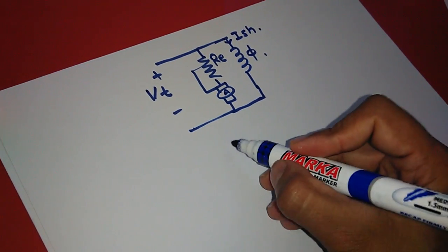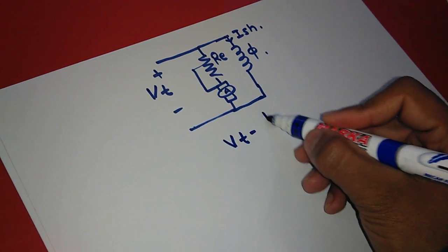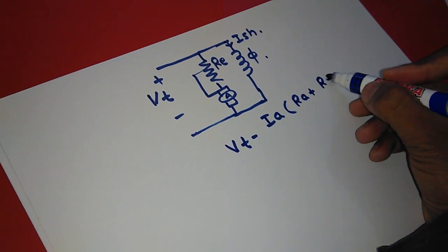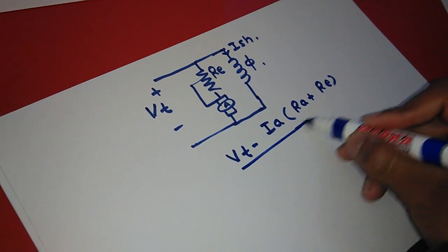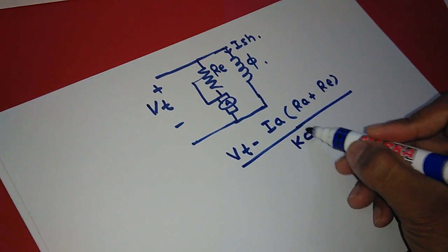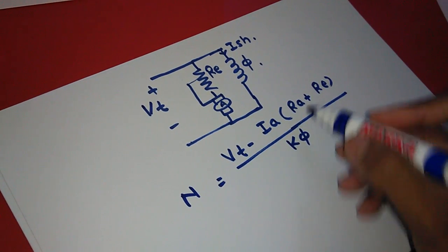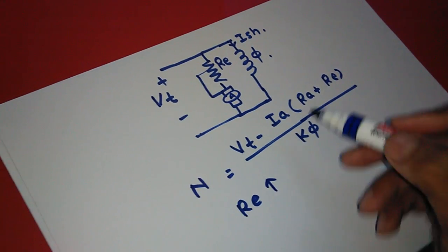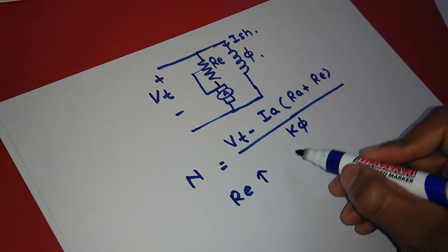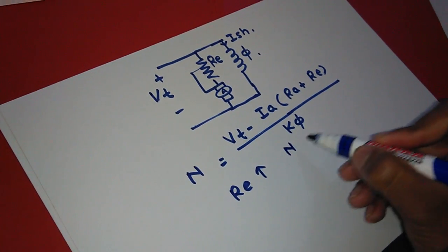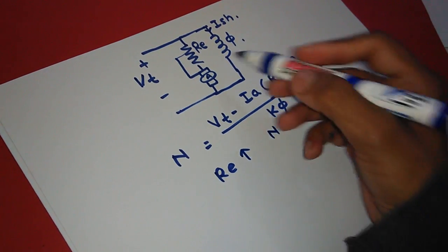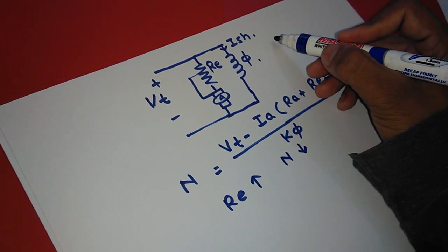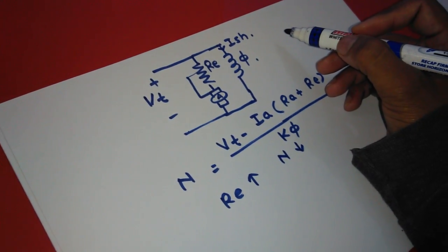From this method we can see that N is proportional to Vt minus Ia(Ra plus Re) upon Kφ. By changing the external armature resistance, the Ia Ra drop will be increased so that speed is also decreased. In the case of series motor or shunt motor this method can be done easily, and for small motors this method is suitable.